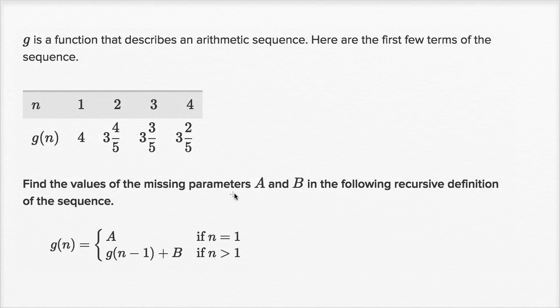Find the values of the missing parameters A and B in the following recursive definition of the sequence. The nth term is going to be equal to A if n equals one, and it's going to be equal to g of n minus one plus B if n is greater than one.